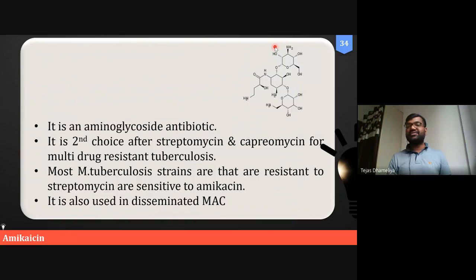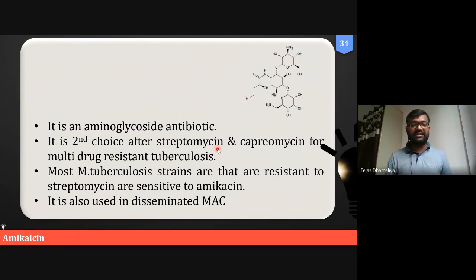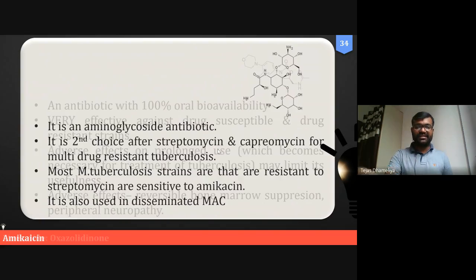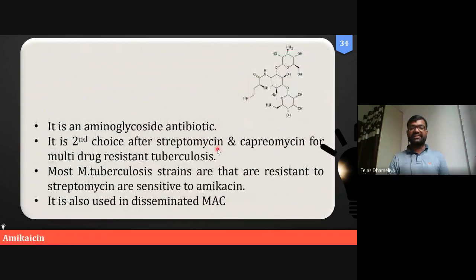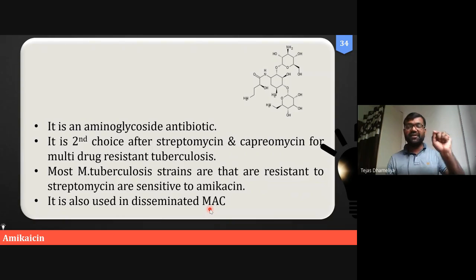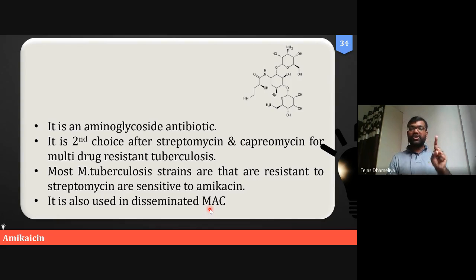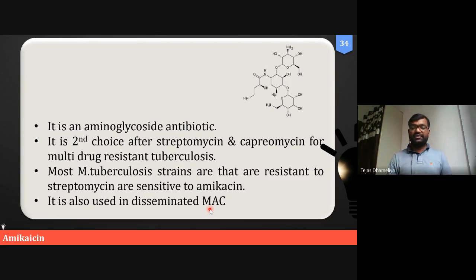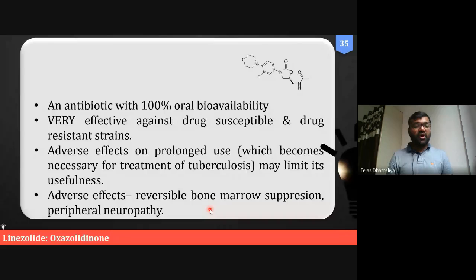Amikacin is another aminoglycoside antibiotic and is a second choice after streptomycin or capreomycin. It is used in disseminated Mycobacterium avium cellular complex infections. As with all aminoglycosides, the side effects are ototoxicity and nephrotoxicity — these are the major side effects to keep in mind whenever you encounter an aminoglycoside.